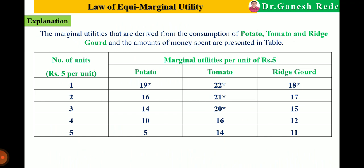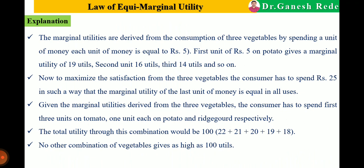A rational consumer will choose such a combination of commodities from which he gets maximum satisfaction. We select the maximum values: 19 from potato, 22, 21, and 20 from tomato, and 18 from ridge gourd. Since we have to choose a combination of 3 vegetables, the rational consumer will choose maximum utils only, because from his limited income he always tries to get maximum utility.